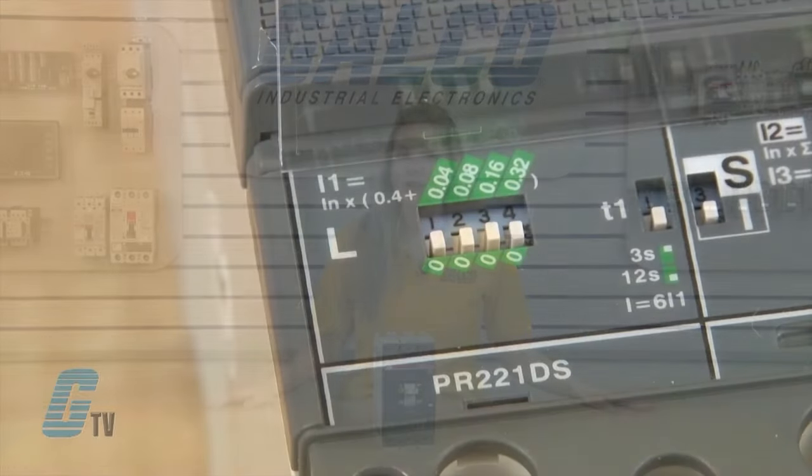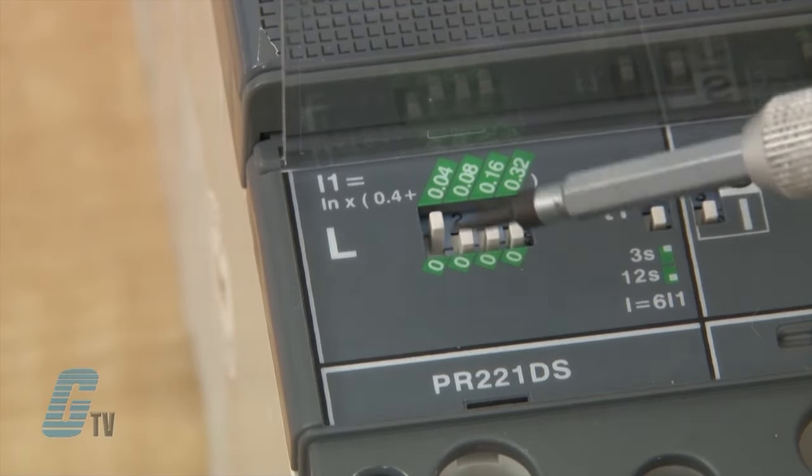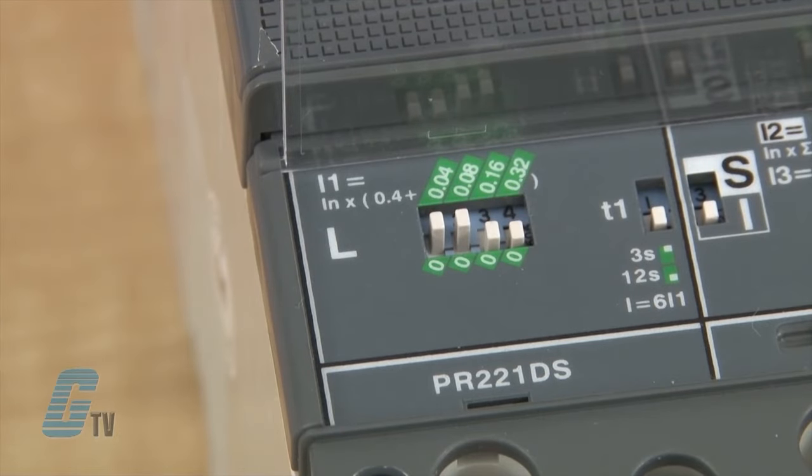The values increase in addition to the 0.4, so if I have the first two switches of 0.04 and 0.08 up, then my overload threshold would be 0.52 or 52 percent of the maximum current rating.